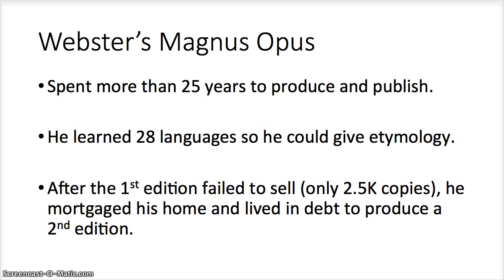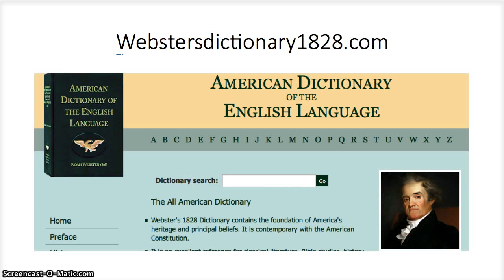I think we are particularly blessed to have this because it provides us a chance to understand the language of the scriptures as they were given to Joseph Smith. You can buy a hard copy, but you can also look online. If you go to WebstersDictionary1828.com, you'll find a search box where you can enter terms. What I want to do now is show you, with some verses we're all familiar with, how this can provide potentially new insights.